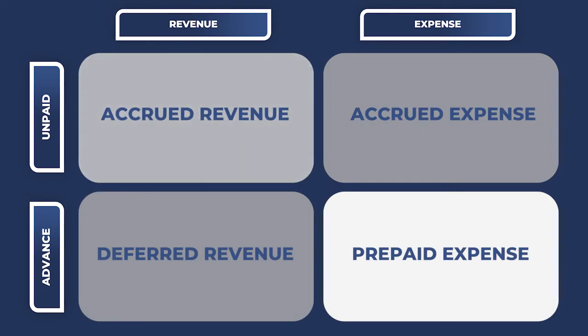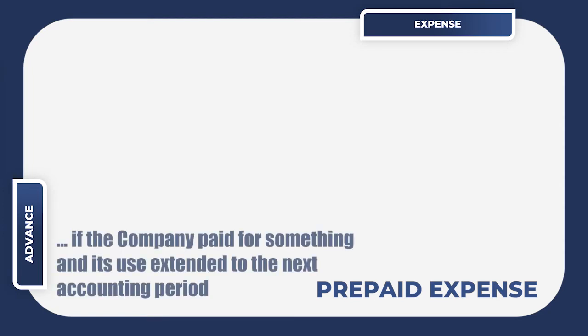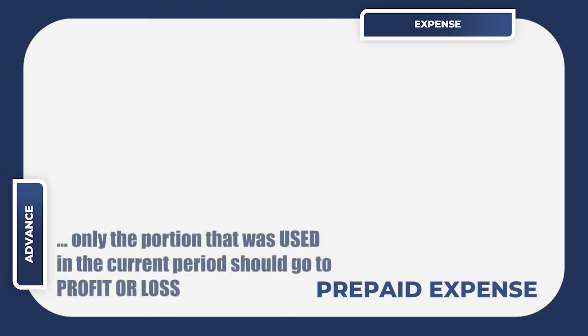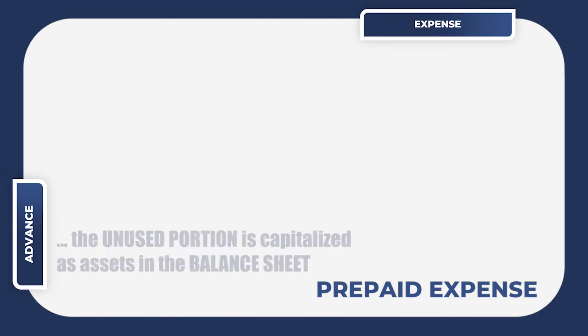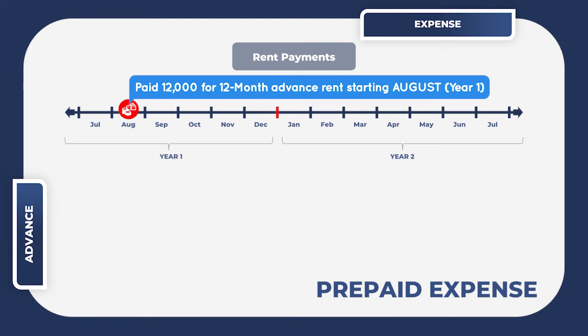Prepaid expenses result from transactions where the company pays in advance for something that is yet to be used, or the usage extends to the next accounting period. This needed a separate category because only the portion used in the current period should go to profit or loss — the rest are capitalized as assets in the balance sheet. The best example is rent. Say that on August 1 you paid one year's rent amounting to $12,000. If your accounting period ends December 31, then you should only have five months of rent appearing in your income statement instead of the whole twelve.